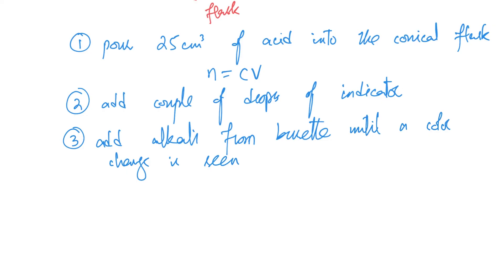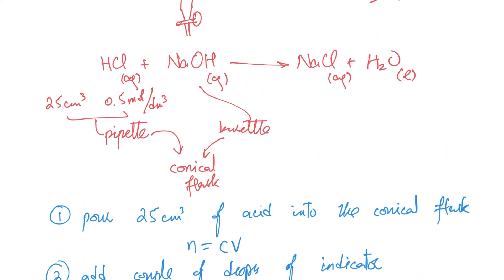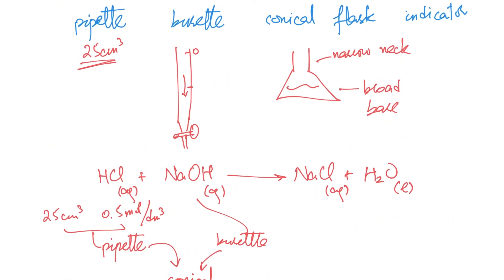At that point, stop the burette and read the volume from the burette. That's the whole point of using a burette. It has zero at the top and it tells us what volume you've added. Let's suppose in this particular case, I add 22 cm³ of the alkali.